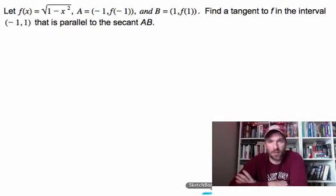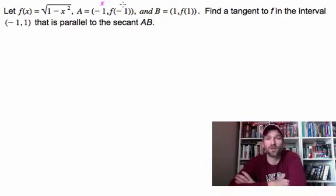Okay, look at this complicated piece of work right here. We're going to let f(x) equal the square root of 1 minus x squared, and we're going to look at two different points, A and B.